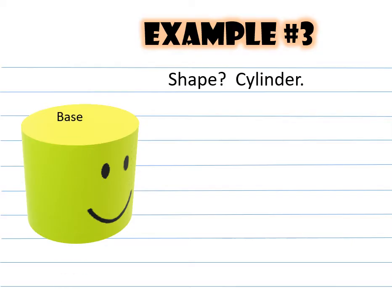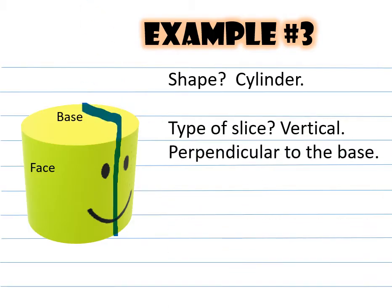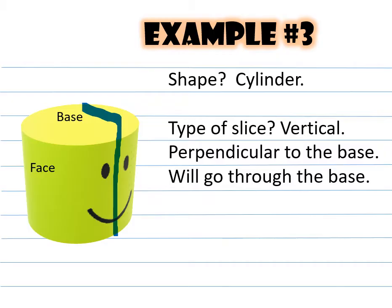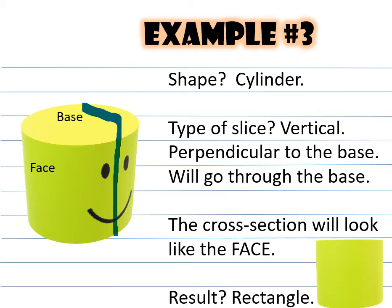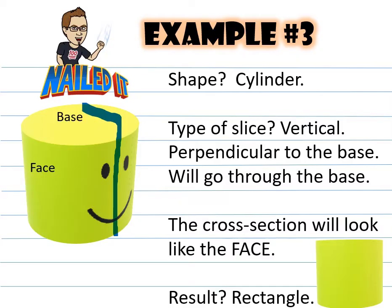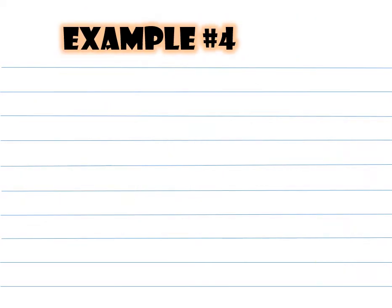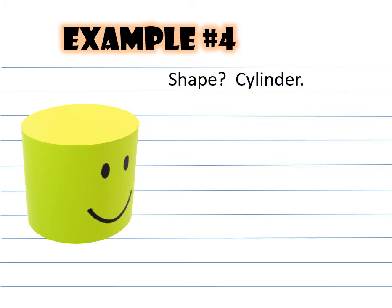Example number three: this shape is a cylinder. The type of slice is vertical — it is perpendicular to the base and will go through the base. The cross section will look like the face. When you open that up, the result will be a rectangle.